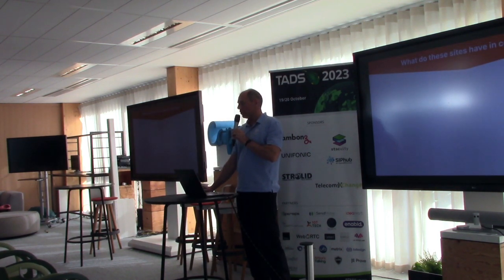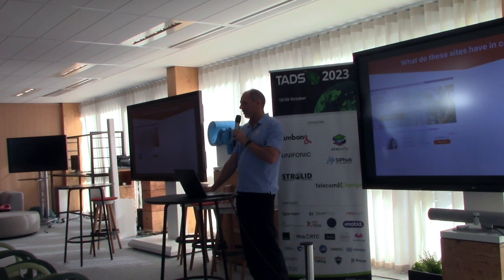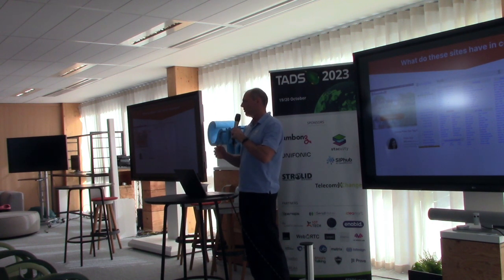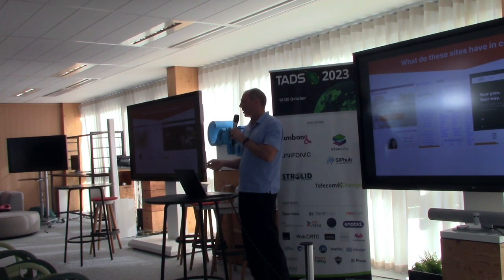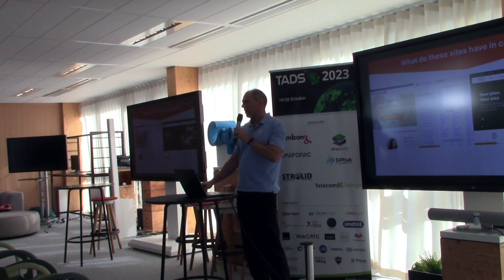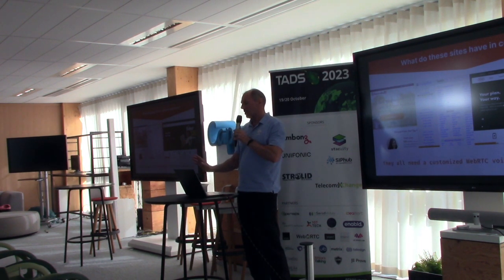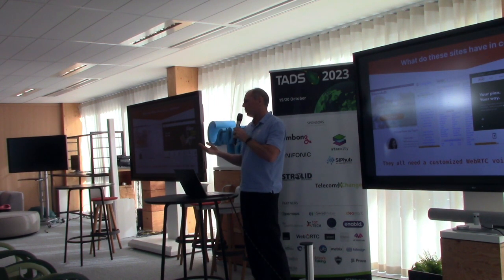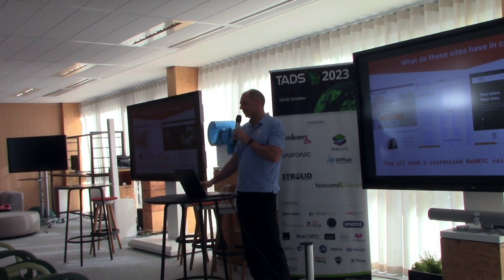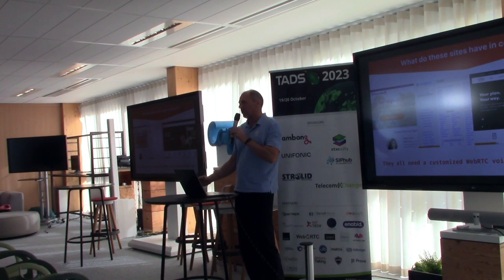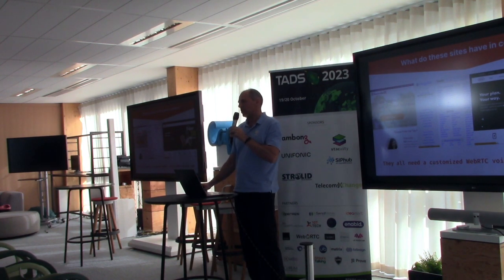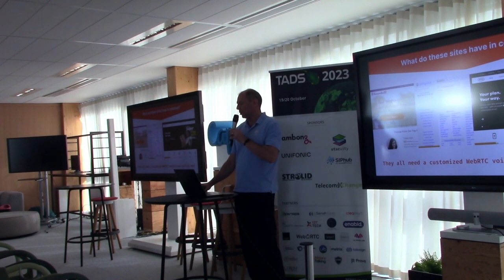What do these things have in common? A site which does tarot card reading. Craigslist — and for those not from North America, this is an online marketplace where you can buy and sell things such as Wallapop or OLX — and a typical mobile operator in South Africa. What they have in common is they all would need a voice or video communication app to serve their customers better. We're going to talk about how they can get that app working and on the market in the shortest possible timeframe with the least amount of resources involved.